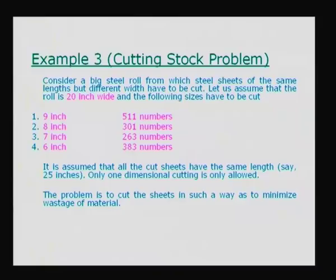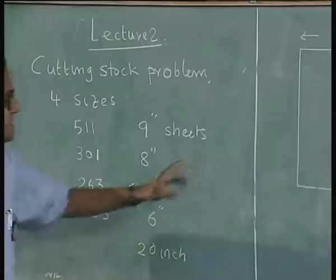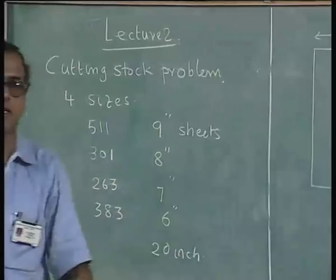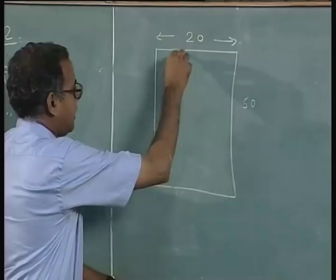You can assume that either we have 10,000 such 20-inch wide sheets with say 50-inch length, and you want 50-by-9 (511), 50-by-8, 50-by-7, and 50-by-6. Or we could think in terms of an infinitely long roll of 20-inch width from which we want to cut these sizes. The length is not important; the width is important and we are looking at one-dimensional cutting only along the width.